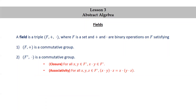Associativity: for all x, y, z in F*, (x × y) × z = x × (y × z). Commutativity: for all x, y in F*, x × y = y × x.